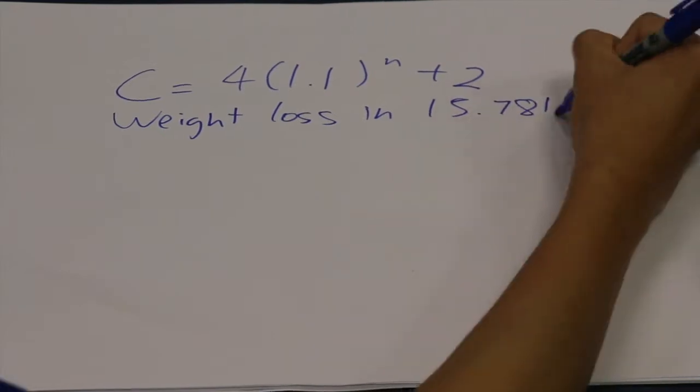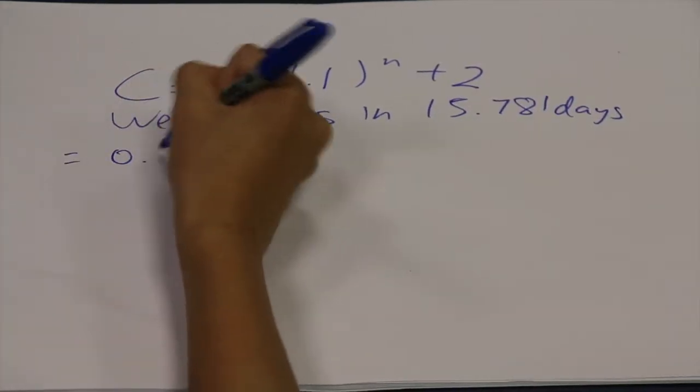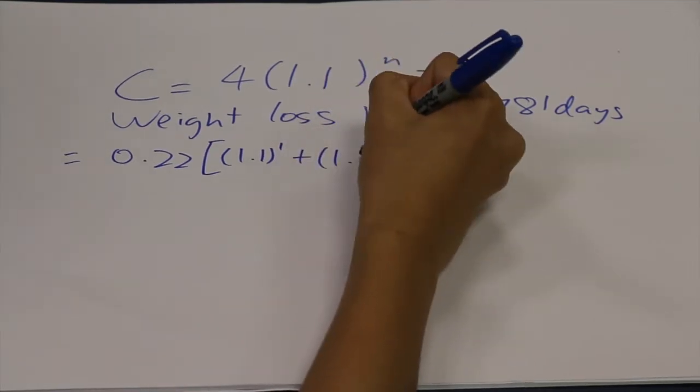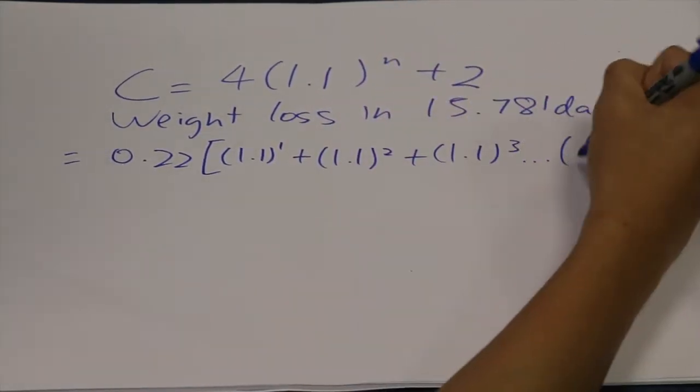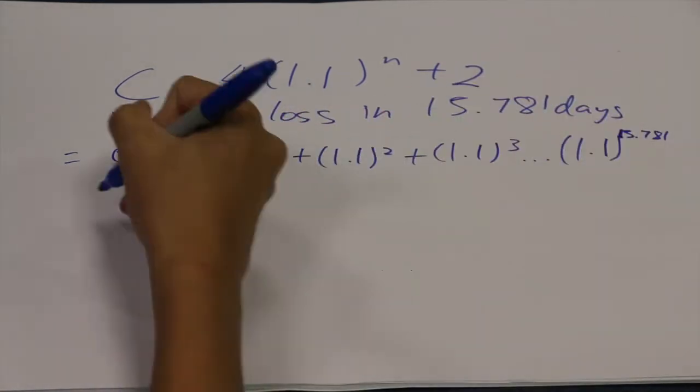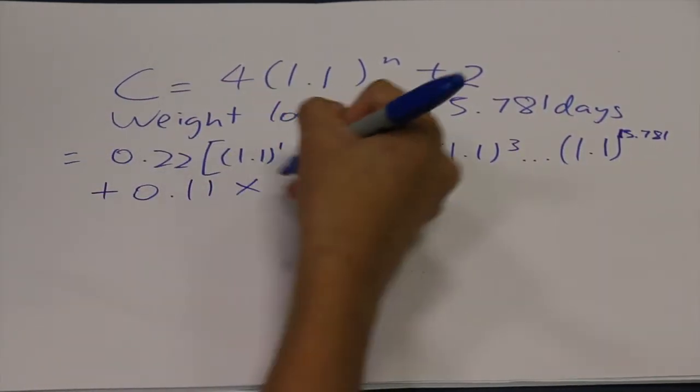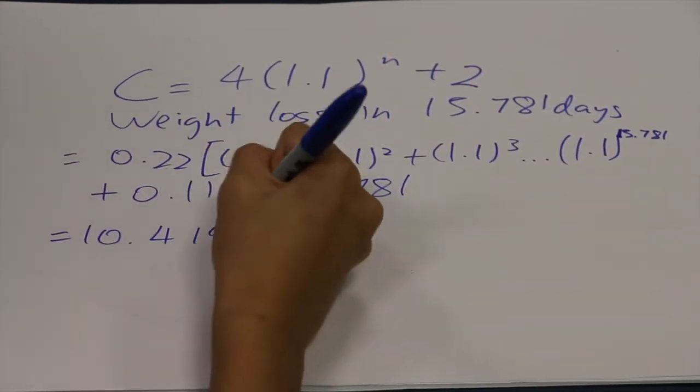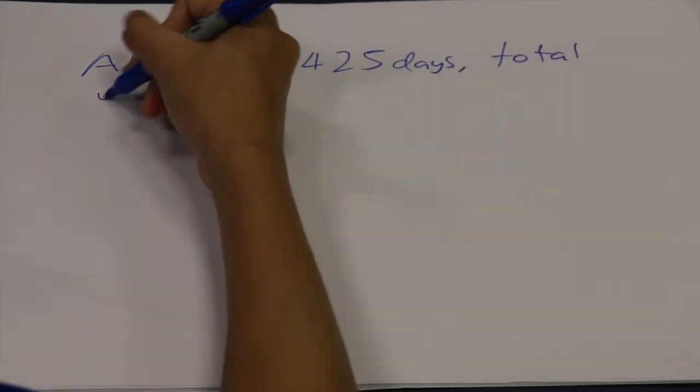1.1 to the power of 1 plus 1.1 to the power of 2 plus 1.1 to the power of 3, all the way to plus 1.1 to the power of 15.781. And we add 0.11 times 15.781, which will give us 10.415 grams. After 3.7425 days, the total weight loss equals 3.29595 grams.